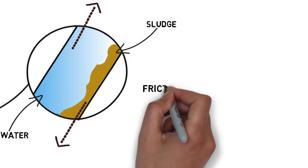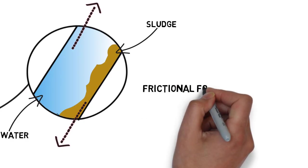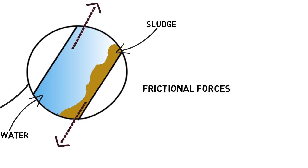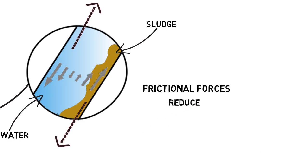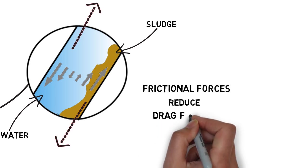As in a water pipe, frictional forces get higher as closer water gets to the pipe surface. Therefore, particle settling and sludge accumulation is improved because drag forces are reduced by frictional forces.